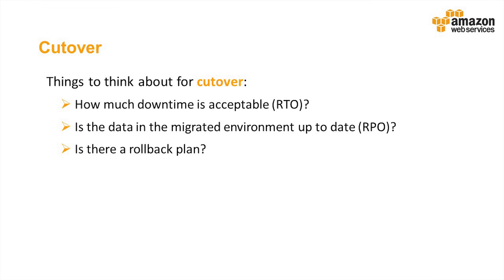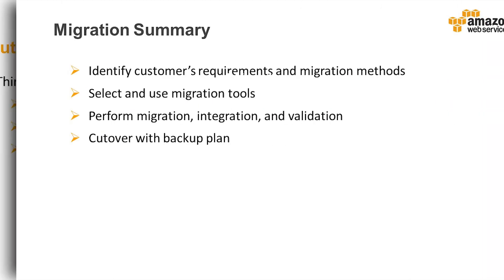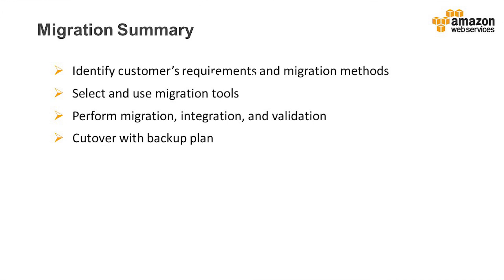It is a must to have a rollback plan to ensure production continuity in case of cutover failure. In summary, for migration we need to first identify customers' requirements, understand the different migration methods, and accordingly select migration tools. Using the tools, we perform migration and then do integration and validation. With a backup plan in place, we can switch from the source environment on-premise to the target environment in the cloud. Thanks for watching.